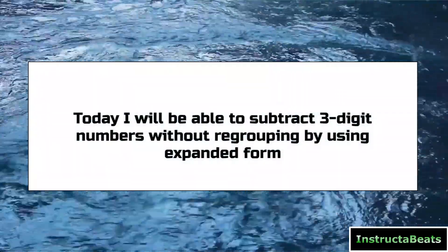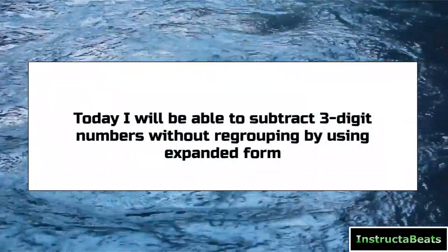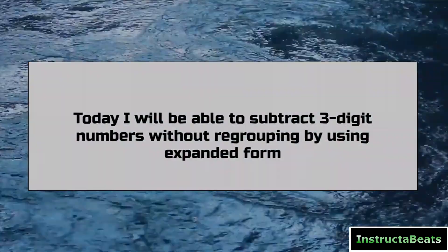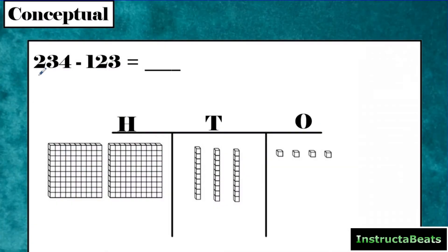Our objective today: we'll be able to subtract three digit numbers without regrouping by using expanded form. First, we're going to start with our minuend, which is just a fancy way of saying the number that you are starting with in a subtraction equation. We've set this up with our base 10 blocks. Here we have our 100s, 10s, and 1s chart. We have our 200s, the 2 in the 100s place. Our 3 in the 10s place tells us we need 3 10s. And then our 4 in the 1s place tells us that we need 4 1s.